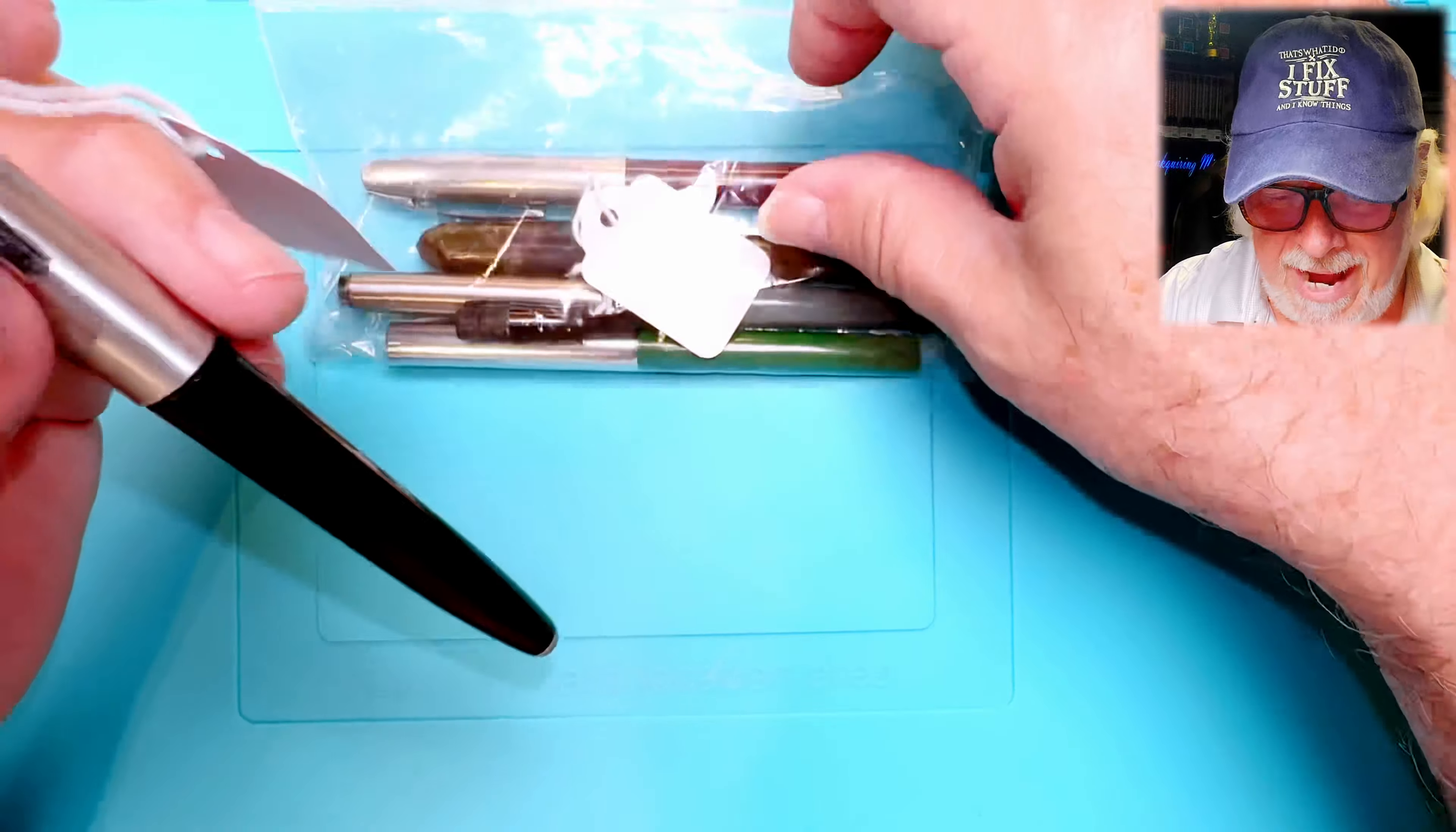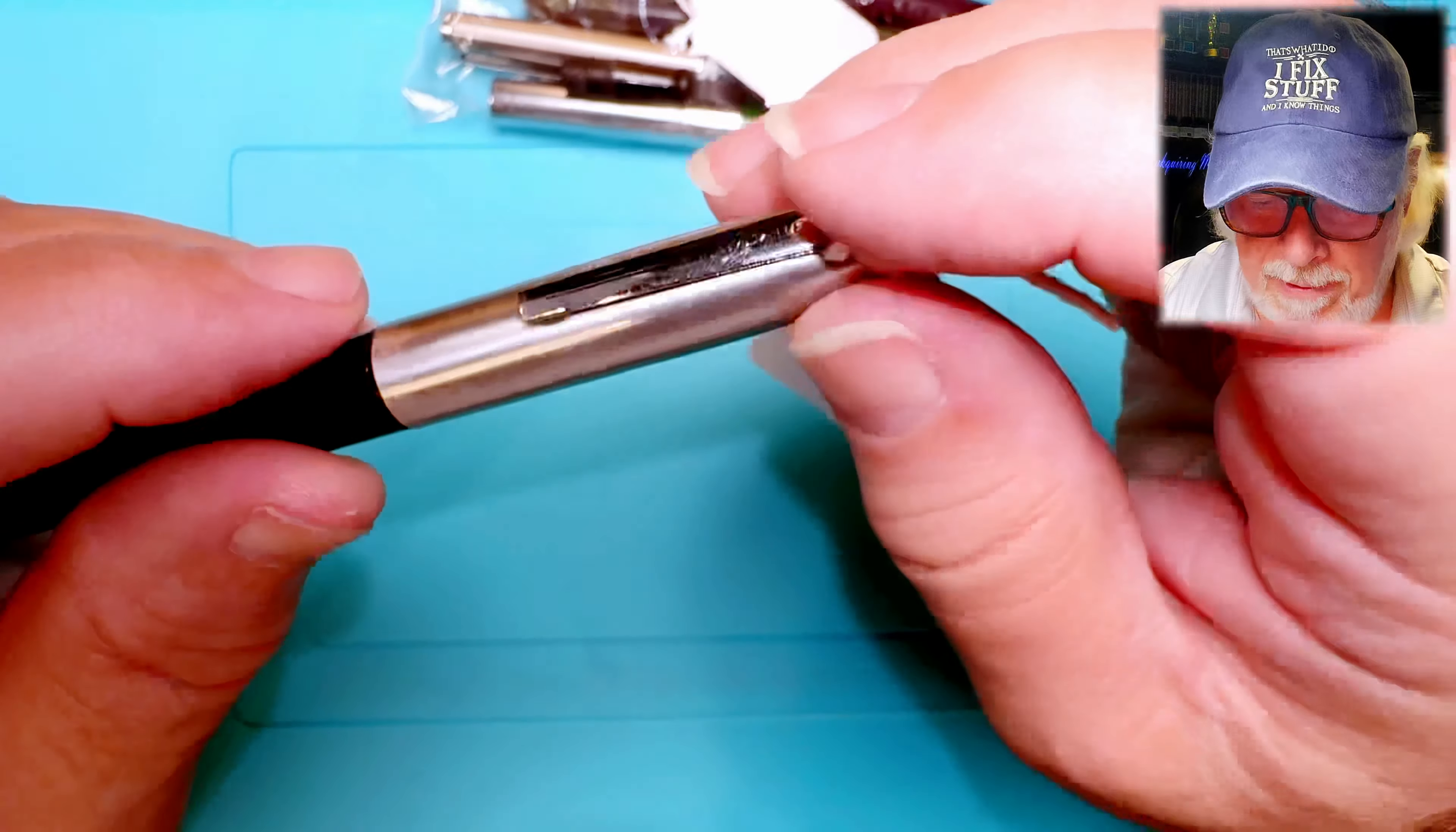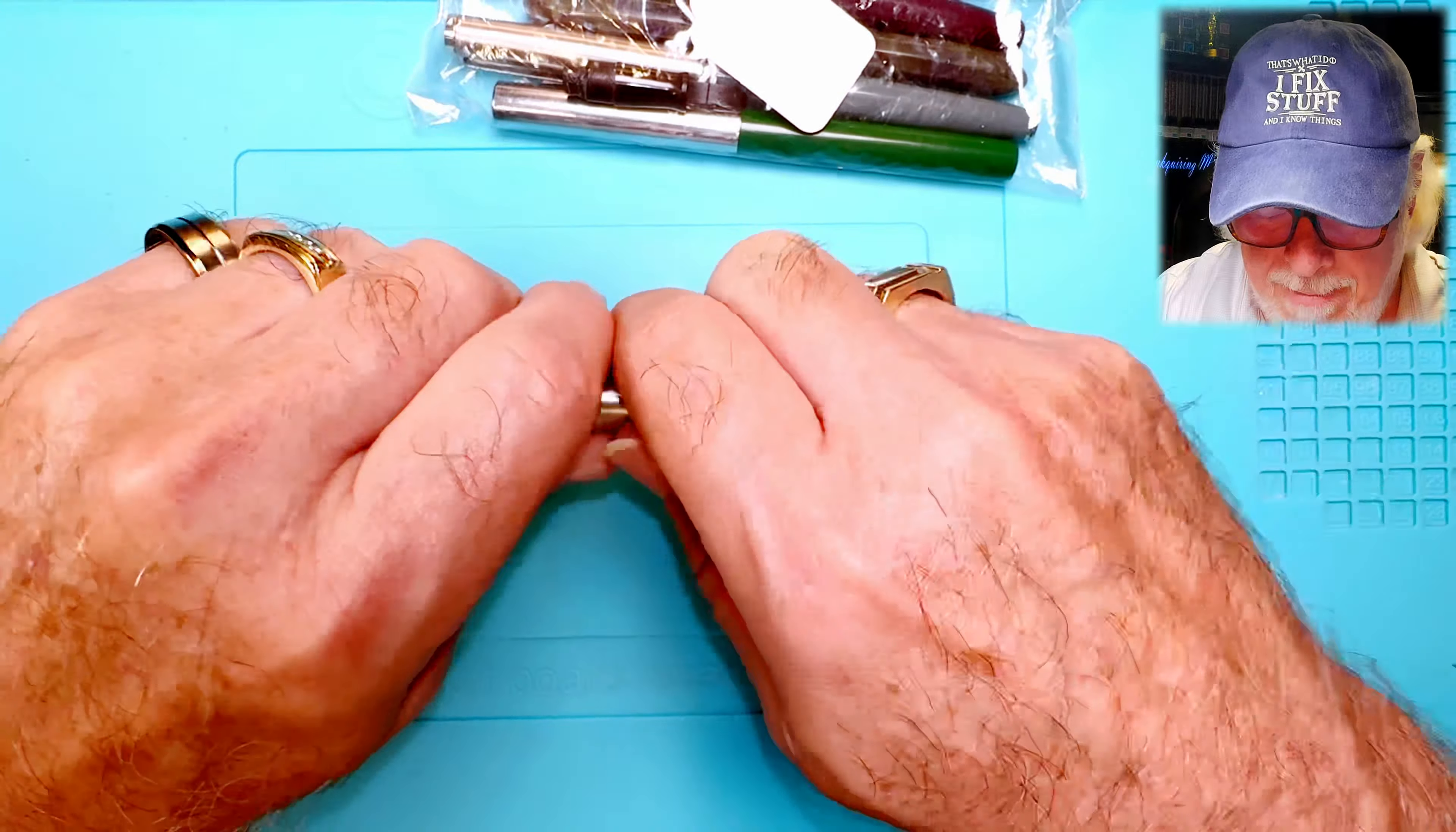So here's one with a tag attached, and the tag says Vintage Wherever Fountain Pen, $15. And it does say Wherever on the clip. It's got lots of scratching on the plastic body. Any imprints other than scratches? No imprints, just the Wherever there. It's a slip cap. Open that up.